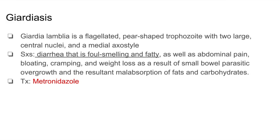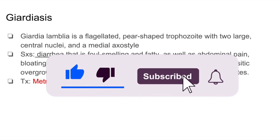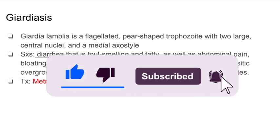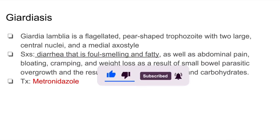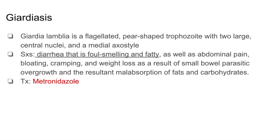Giardia is a flagellated, pear-shaped trophozoite with two large central nuclei. Symptoms you would see include diarrhea that is foul-smelling and fatty, as well as abdominal pain, bloating, and cramping.